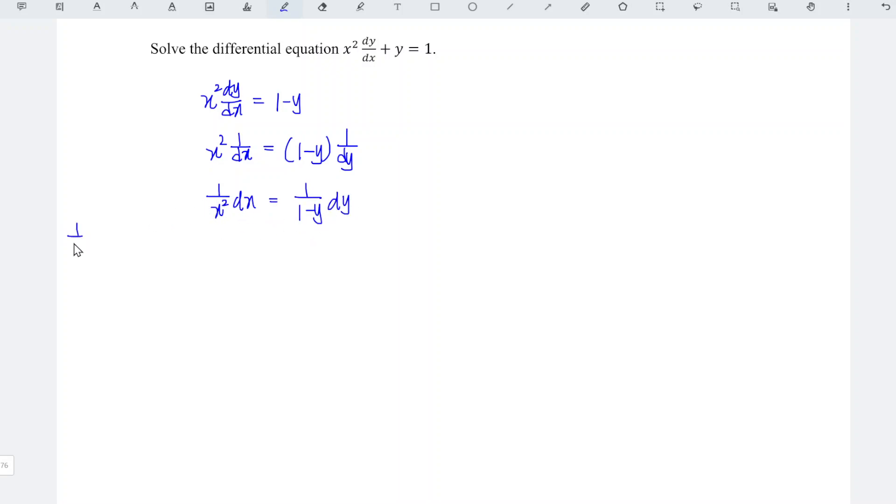We can see that 1 over x squared equals x to the power of negative 2, which means that when we integrate both sides we should have power plus 1 over power plus 1.